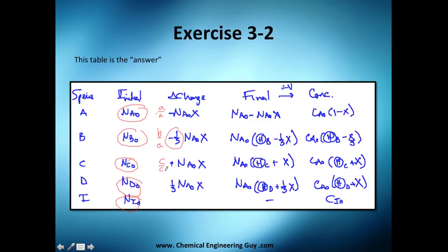For C, it's c divided by a — that's 1 divided by 1 — so positive one times X_A, because C is a product. Products are positive, reactants are negative. And D is also plus one-third X_A, since d/a = 1/3.